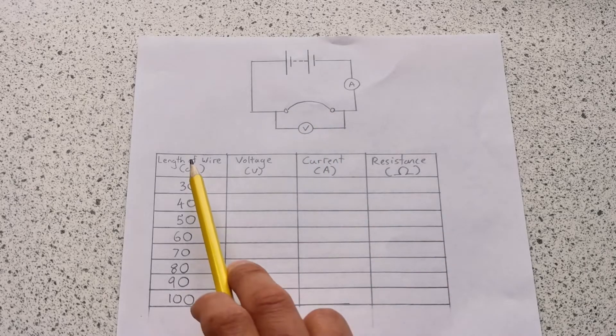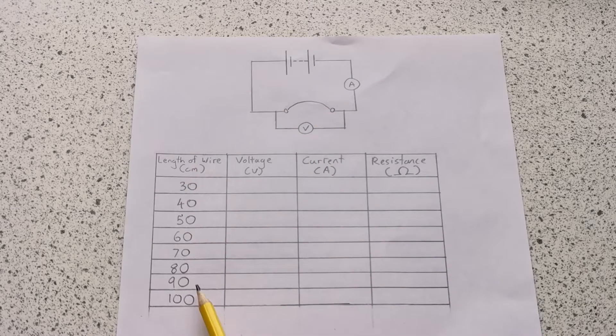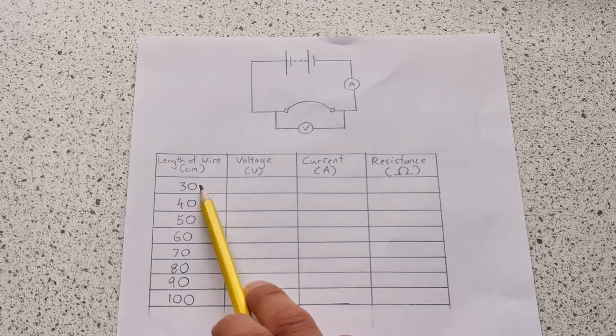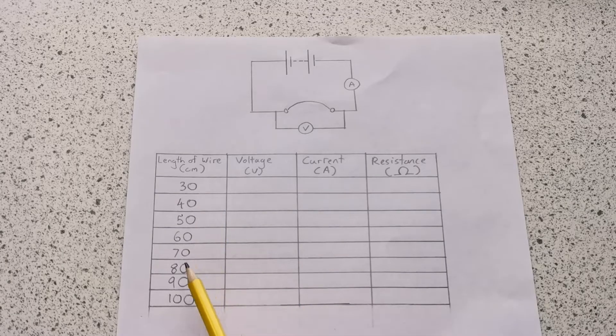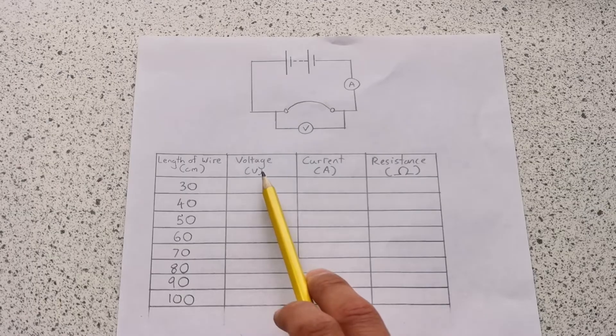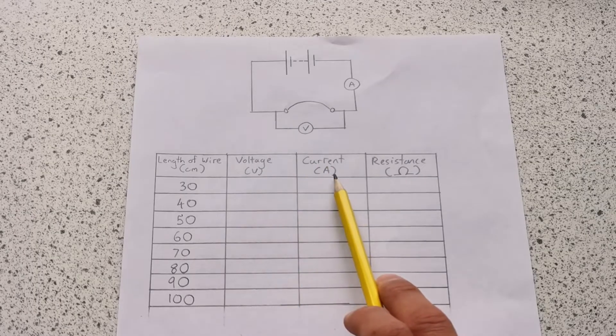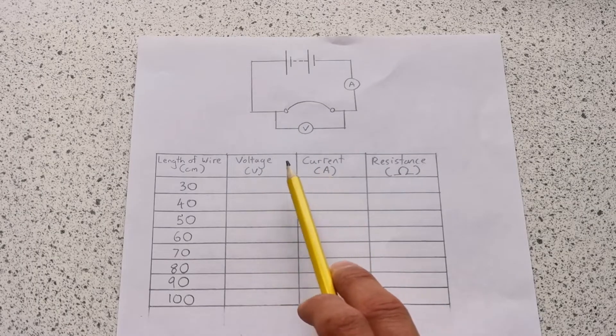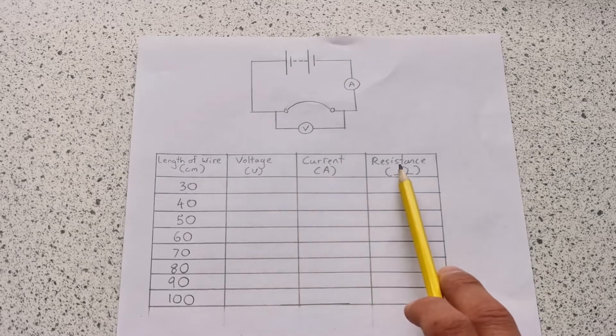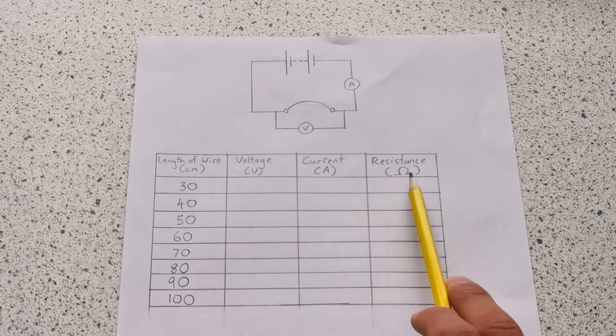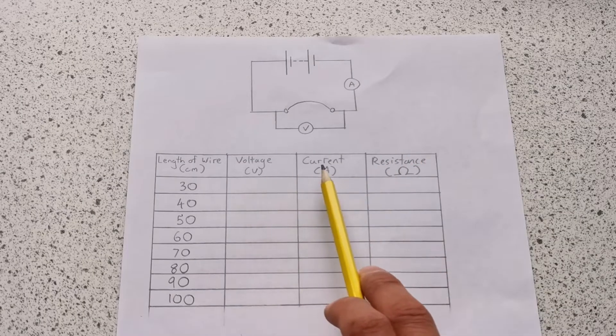So my independent variable, what I'm changing, is the length of the wire. As you can see I'm starting from 30cm and going up in 10s until I reach 100cm. I need to measure the voltage, I need to measure the current, and then using these two values I can work out the resistance because resistance is voltage divided by current.